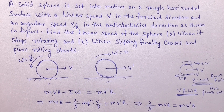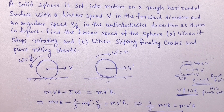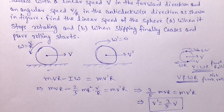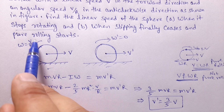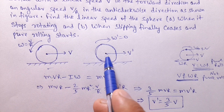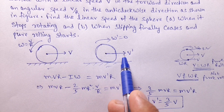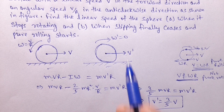Solving, we get (3/5)·m·v·r equals m·v'·r. Cancelling m and r from both sides, v' equals 3/5 V. So when rotation stops, the sphere has only translational velocity v' equal to 3/5 V.